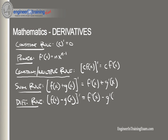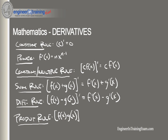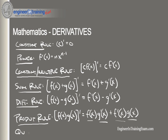The product rule states that if f and g are differentiable functions and we have their product, the derivative is the first function f(x) times the derivative of the second function, plus the derivative of the first function times the second function g(x). So: derivative of [f(x)·g(x)] = f(x)·g'(x) + f'(x)·g(x).